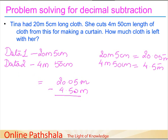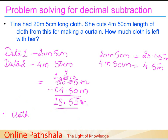So we compute 20.05 minus 4.50. Starting from the right: 5 minus 0 is 5. Next, 0 minus 5 requires borrowing, but that column is also 0, so we borrow from the ones — giving 10 here; that column becomes 9, then 10 minus 5 is 5, and 9 minus 4 is 5. The whole number part becomes 1. The answer is 15.55 meters of cloth is left with Tina.